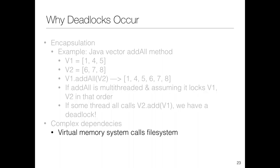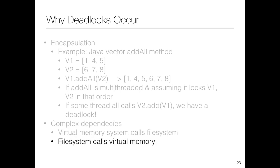Deadlock also arises from complex dependencies in the code. For example, the virtual memory system can call the file system—this happens during swapping (swap out). And the file system can call the virtual memory system in the opposite direction. So you can have a situation where A depends on B and B depends on A, creating a deadlock due to poorly managed dependencies.